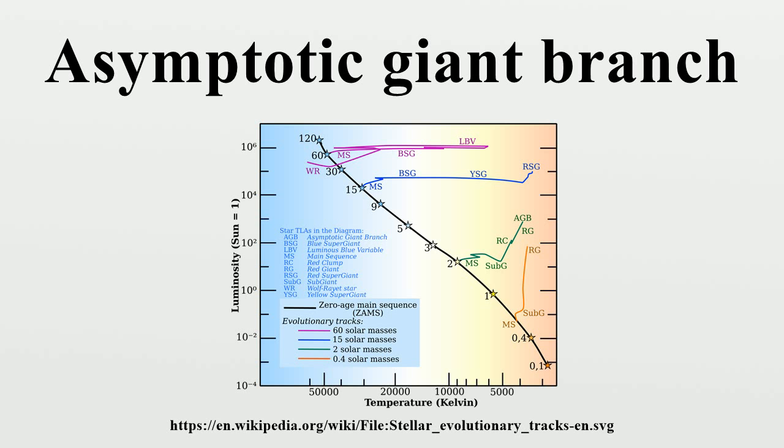Some super AGB stars may explode as an electron capture supernova, but most will end as an oxygen-neon white dwarf. Since these stars are much more common than higher mass supergiants, they could form a high proportion of observed supernovae. Detecting examples of these supernovae would provide valuable confirmation of models that are highly dependent on assumptions.